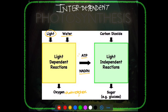The products of the light reaction — ATP and NADPH — are both utilized in the light-independent or dark reaction. They are used to fix carbon dioxide from the atmosphere and convert it into sugar (glucose, C6H12O6). ATP provides energy for the reaction, and the hydrogen in glucose comes from NADPH.